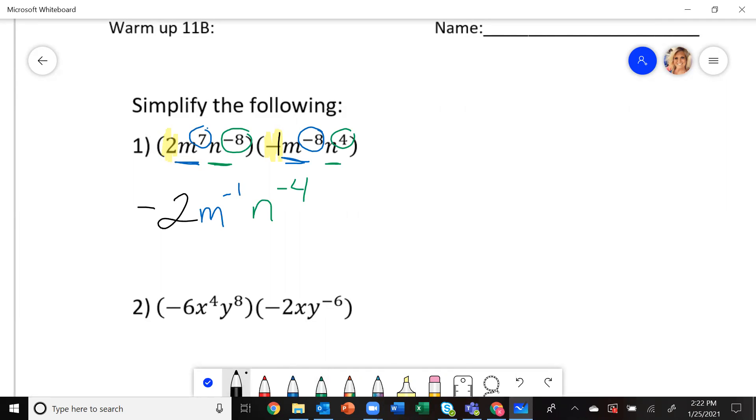This is one way that the answer could be written. So it could be written as negative two, m to the negative one, n to the negative four. But sometimes they're going to write it with positive exponents. The negative two is going to be the same.